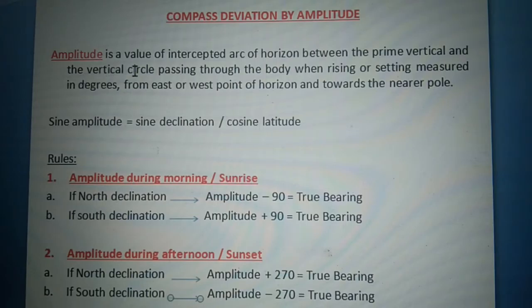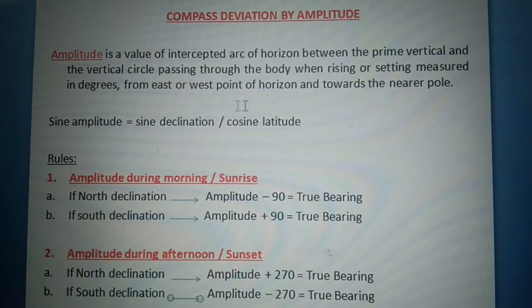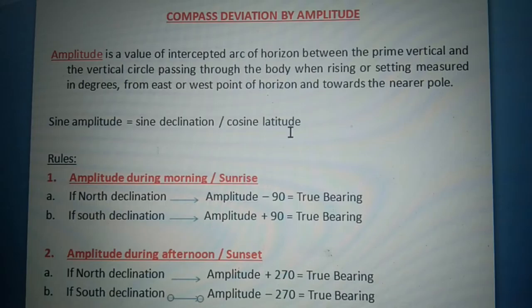Amplitude is a value of intercepted arc of horizon between the prime vertical and the vertical circle passing through the body when rising or setting, measured in degrees from east or west point of horizon and towards the nearer pole. The formula is: sine amplitude equals sine declination over cosine latitude.